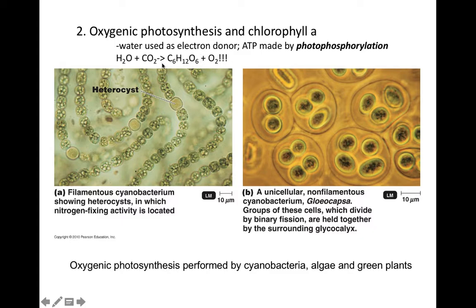It requires light and chlorophyll A. The cyanobacteria were the first cells to evolve chlorophyll A. Through endosymbiosis, primitive cyanobacteria evolved into the chloroplasts of eukaryotes, such as algae and plants.